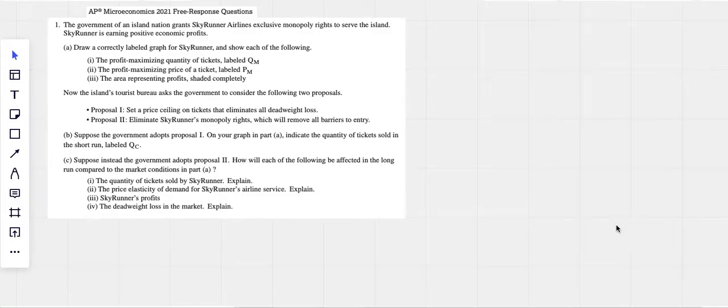Yes, Charles here. Let's do 2021 AP, I think this is set one, number one here. So let's just work our way through this, see if we can do it okay. The government of an island nation grants Skyrunner Airlines exclusive monopoly rights to serve the island and they're making positive economic profits.